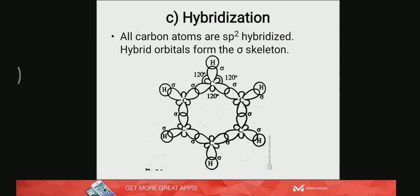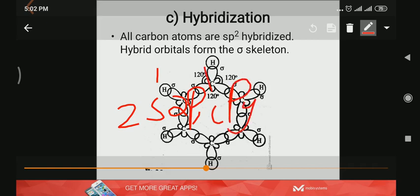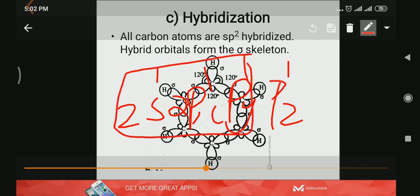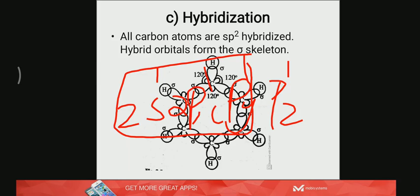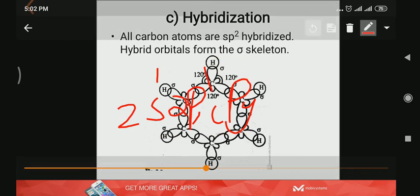Carbon will have the configuration in the excited state 2s1, 2px1, 2py1, and 2pz1. With sp2 hybridization, they form three hybrid orbitals with trigonal geometry with a bond angle of 120 degrees. Using these hybrid orbitals, the six carbons form the sigma skeleton.